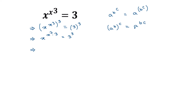Again we can write a to the power b times c as a to the power c times b. So we can rewrite this as x to the power 3, whole to the power x cube, is equal to 3 to the power 3.